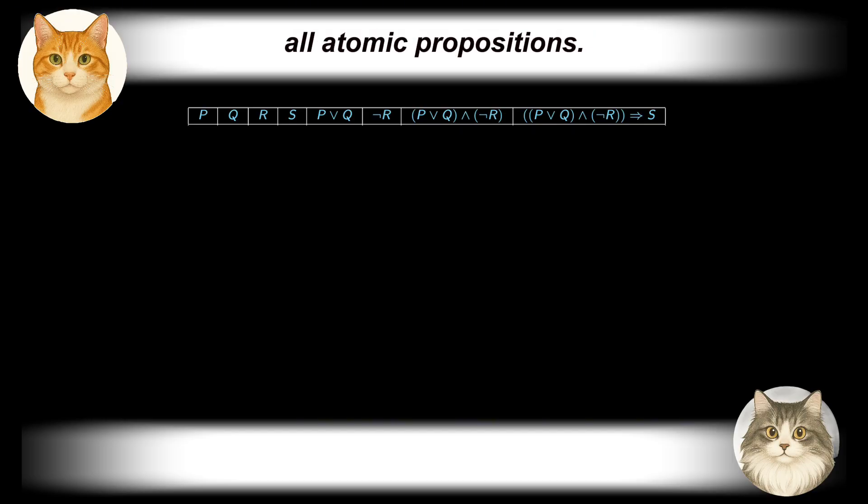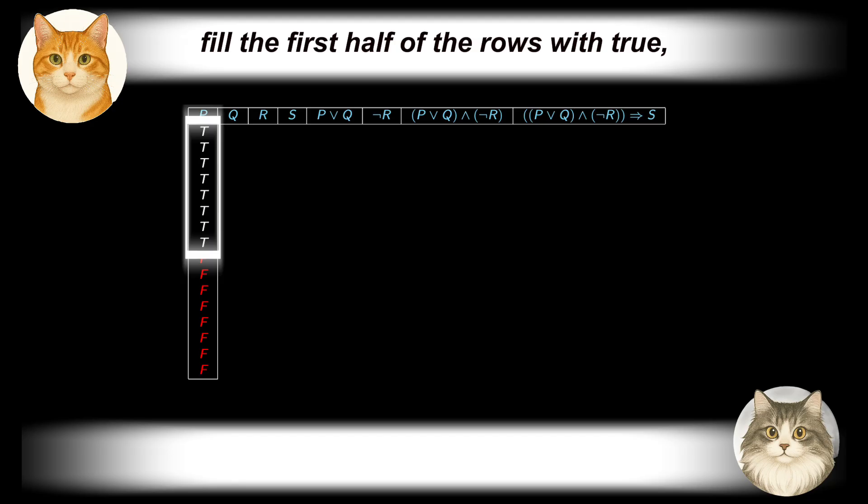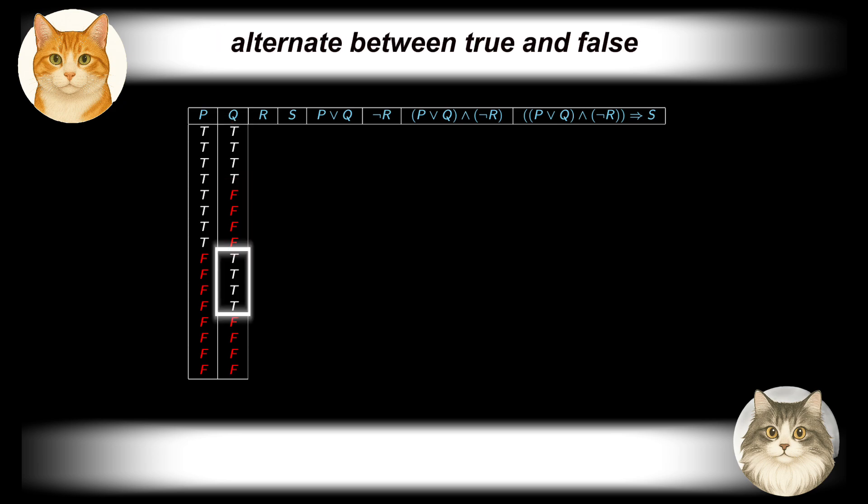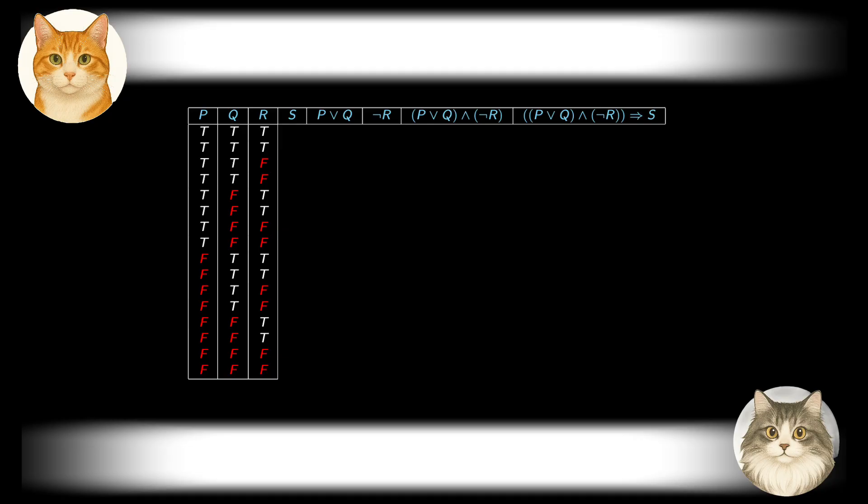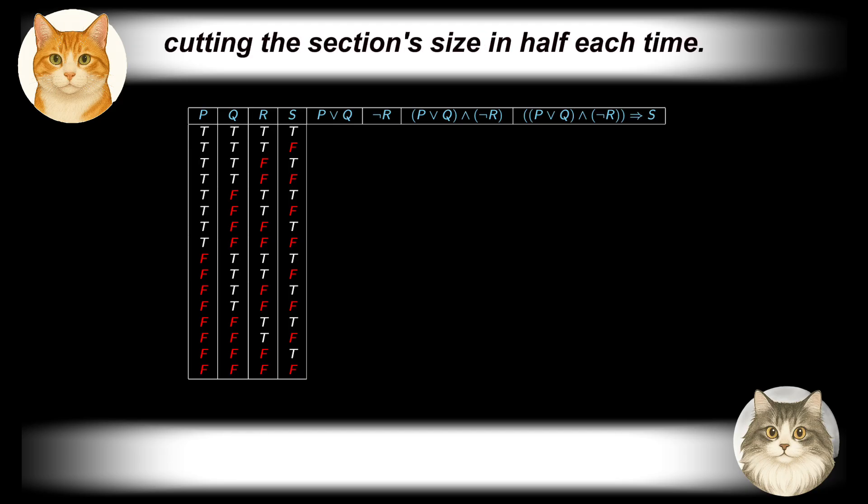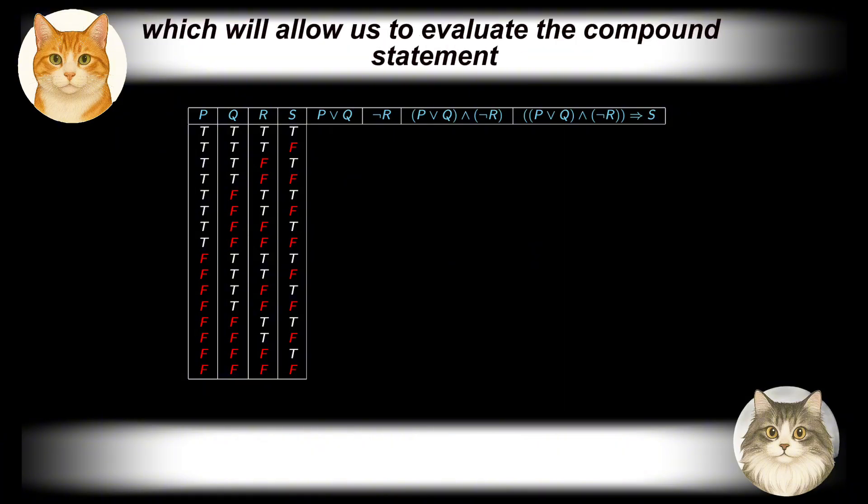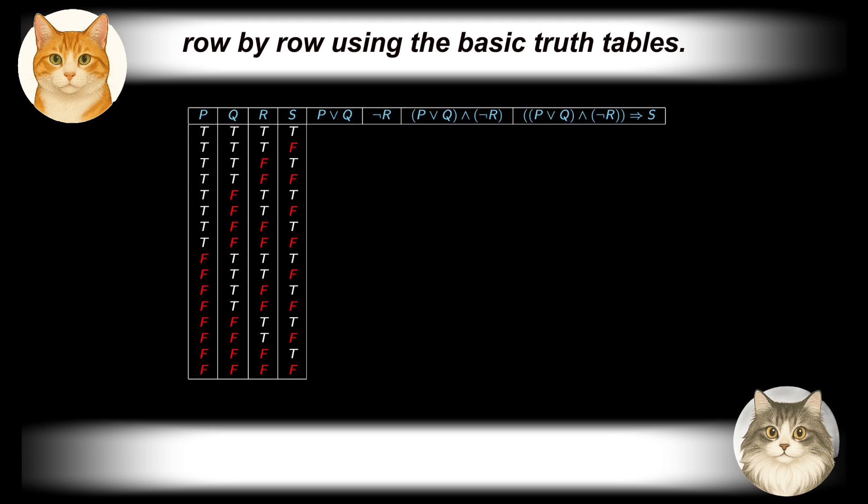We first fill the columns of all atomic propositions. For the first atomic proposition, fill the first half of the rows with true and the second half with false. For the second atomic proposition, alternate between true and false every quarter of the rows. For the third atomic proposition, alternate every eighth of the rows: true for one eighth, then false for one eighth, and repeat. Continue this pattern. Each new column alternates truth values over progressively smaller blocks, cutting the section size in half each time. This way, we generate all distinct combinations of truth values in an organized fashion, which will allow us to evaluate the compound statement row by row using the basic truth tables.